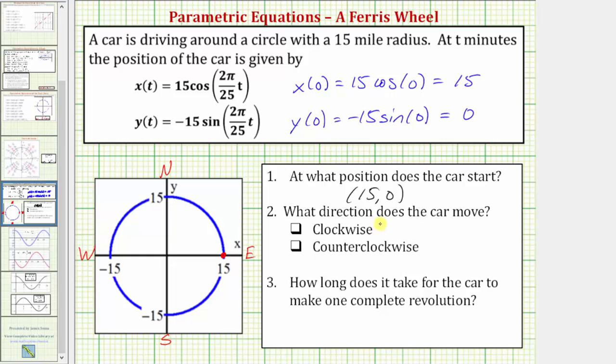Number two, we're asked what direction does the car move clockwise or counterclockwise? So now we know the car starts here, but as t increases, we want to know would the circle be traced out in this direction clockwise or this direction counterclockwise? And there are several ways to determine this. We could just make a table of values and find some additional points on the circle as t increases.